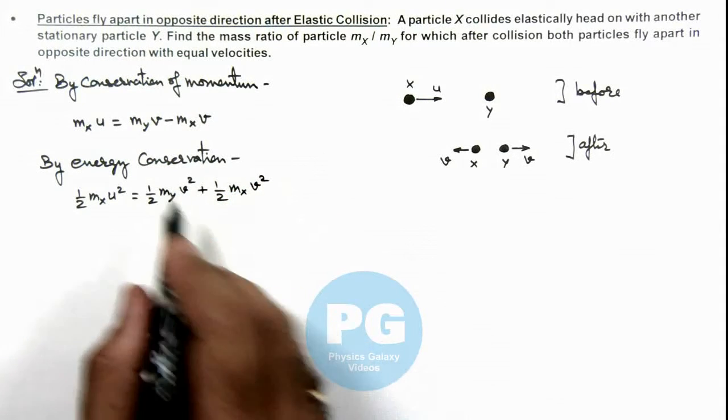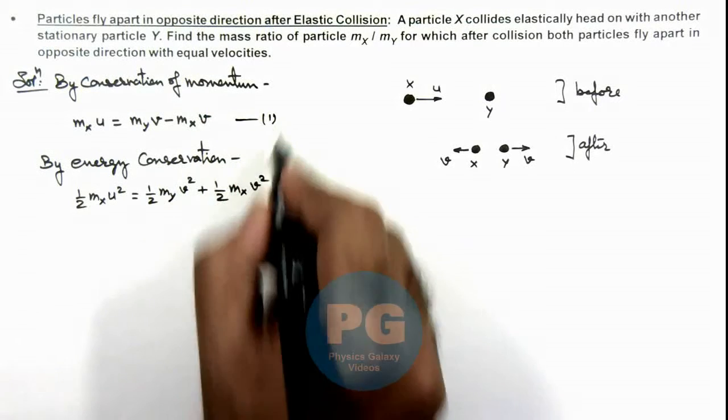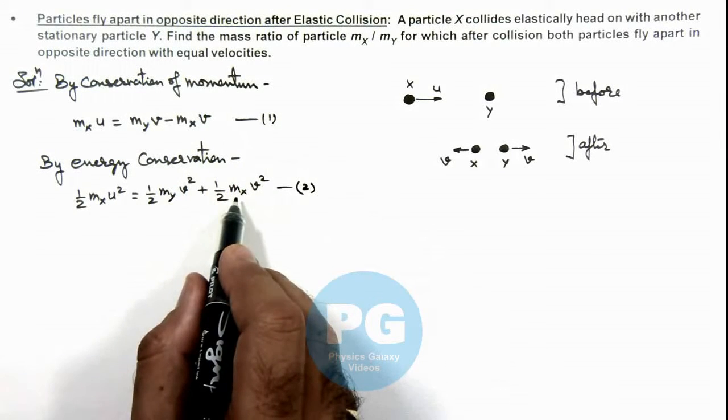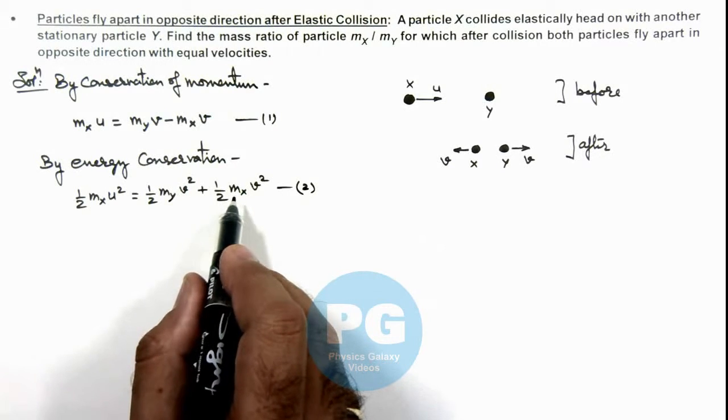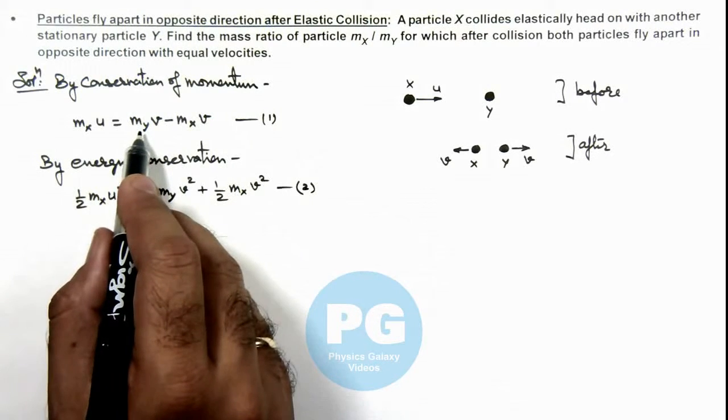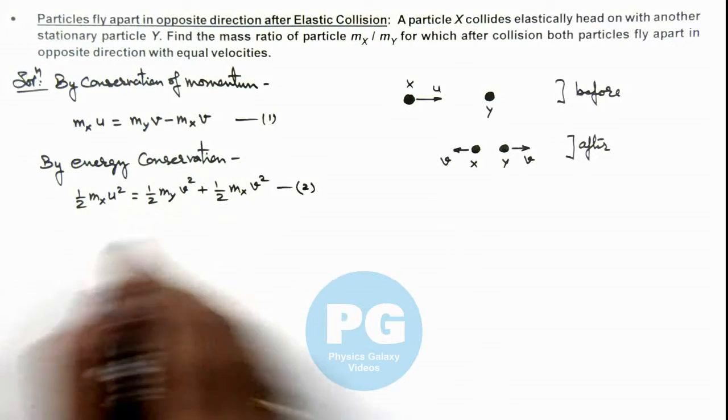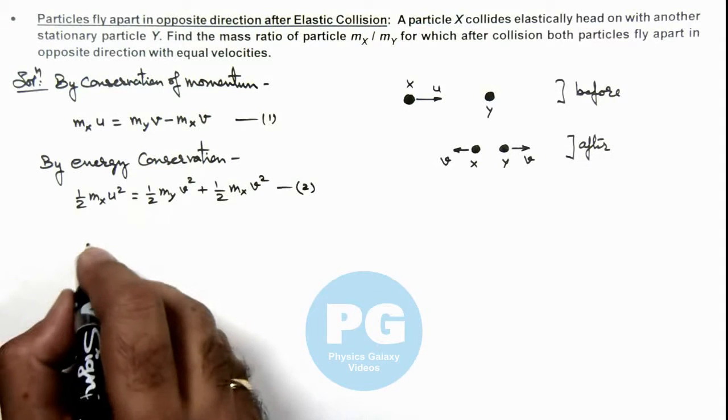Now, in this second equation, say if this is equation 1 and this is equation 2, then in second equation we can substitute the value of v which is mx over my minus mx into u. Then we'll be getting here half gets cancelled out.